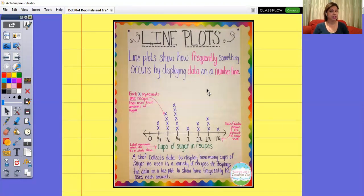A chef, for this particular one, collects data to display how many cups of sugar he uses in a variety of recipes. Now he displays the data on this line plot to show how frequently he uses each of the amounts. So he's saying, these are the amounts I use. So he labeled it cups of sugar in recipes. These are the amounts of sugar that I use. And then he doesn't put a dot on them, but he does put an X. It's just easier for him to use an X instead of making a big dot or making the dot look like a zero. So he prefers using an X, and that's fine because it's pretty much a picture graph, a bar graph.